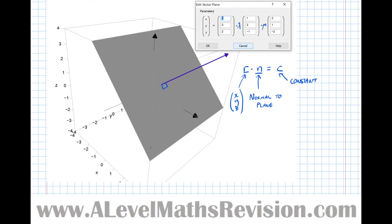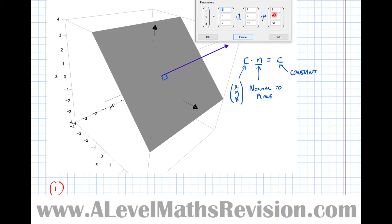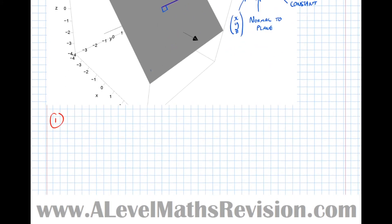What we're going to do now is convert the parametric form into the normal vector form. We need two things: the normal to the plane, and the constant c. The normal to the plane can be found by computing the vector product of the two direction vectors, since those directions are parallel to the plane, so anything perpendicular to both must be perpendicular to the plane.